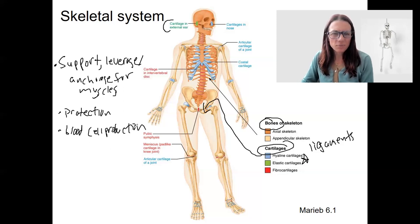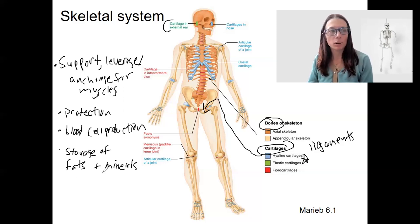Storage and release of minerals and fats. So calcium is a key one. It's also yellow fat in the yellow bone marrow.